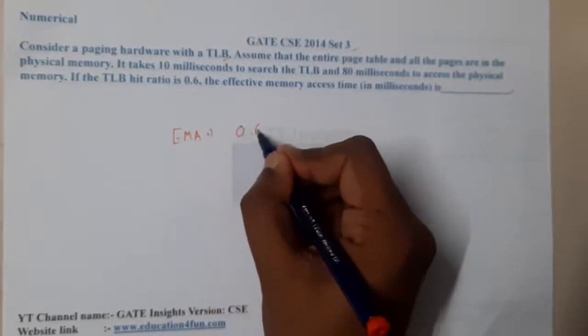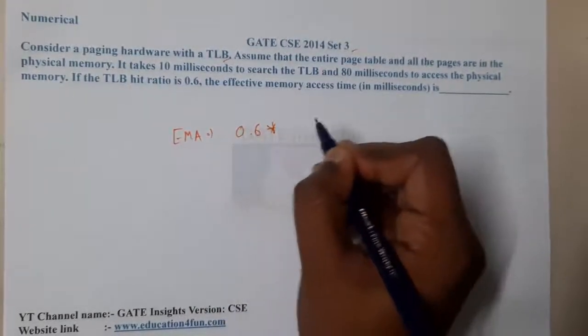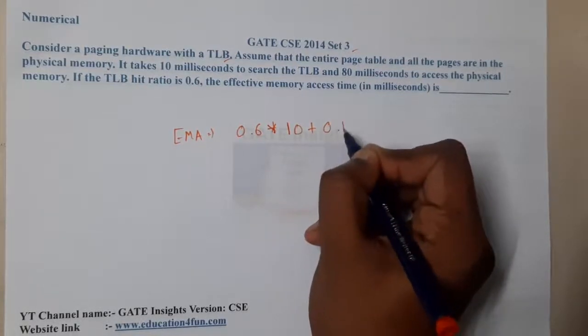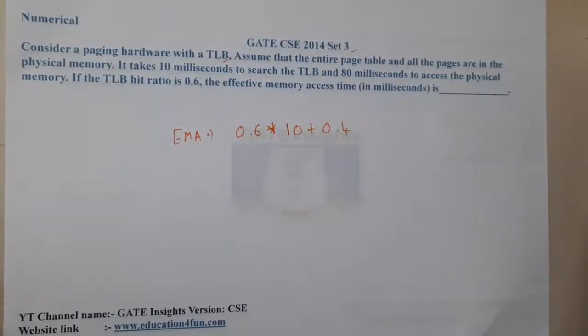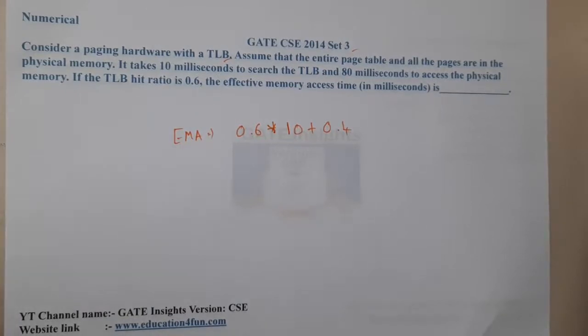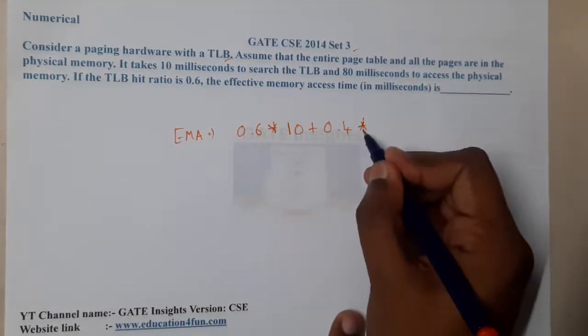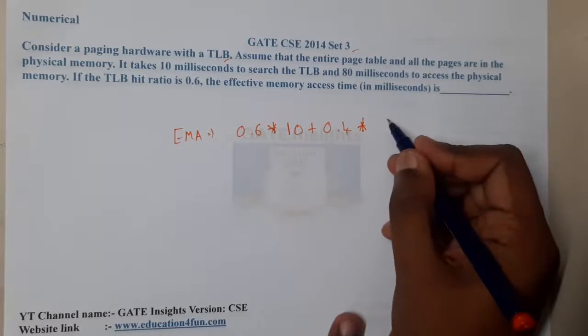The effective memory access time is the hit ratio times 10 plus the miss ratio. So the miss ratio into...